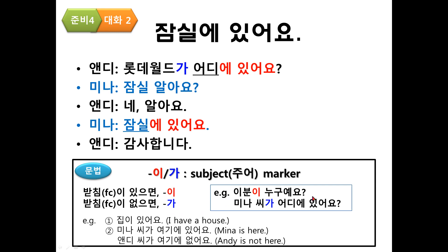Example: 이분이 누구예요? 이분 means this person and has 받침, so we use 이. 이분이 누구예요? Who is this person? Mina 씨가 어디에 있어요? Mina 씨 ends with a vowel, no 받침, so we put 가. Where is Mina? Another example: 1번, 집이 있어요, meaning I have a house. 2번, Mina 씨가 여기에 있어요, meaning Mina is here. Andy 씨가 여기에 없어요, meaning Andy is not here.